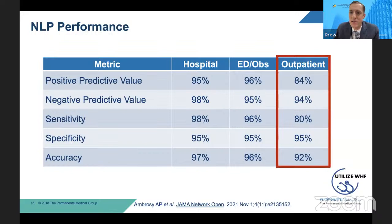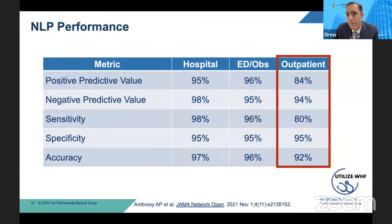We did see a slight decrement when we applied our algorithms for worsening heart failure to true outpatient ambulatory encounters — clinic visits. The challenge there is that things evolve very slowly in the outpatient setting, so there's some under-documentation and a lot of copying forward of notes. That did lead to some more false positives and false negatives compared to other types of clinical encounters. But I would emphasize that our specificity and accuracy were still quite high. What our NLP-based algorithms picked up as consistent with a clinic visit for worsening heart failure is in fact true, though we may miss some.